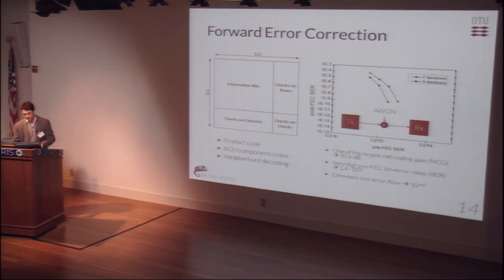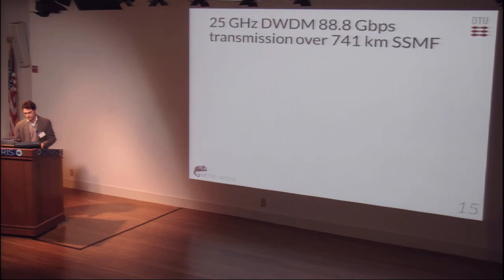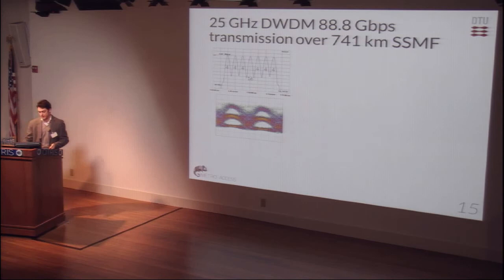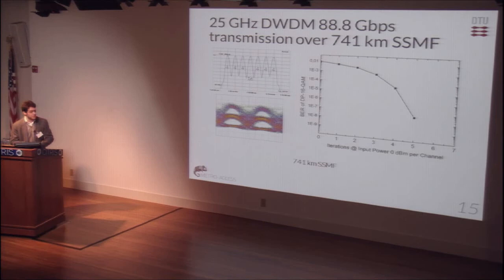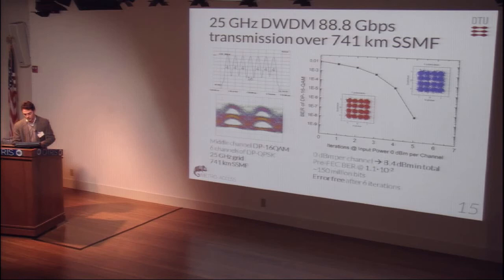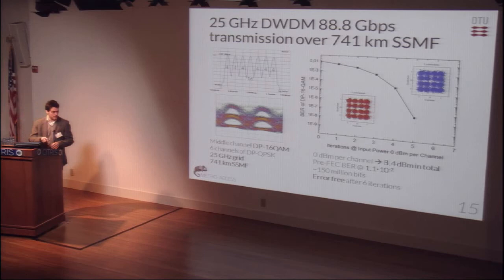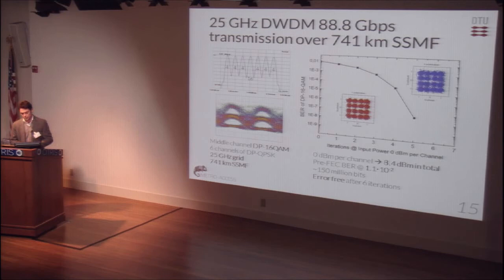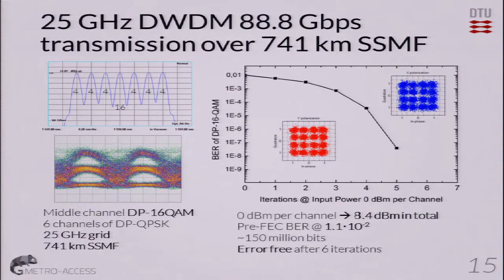As we usually do, we wanted to validate it experimentally. We set up a channel of DP-16QAM at 88 gigabits per second, surrounded by six QPSK channels on a 25 gigahertz grid. We transmitted over 741 kilometers of single-mode fiber and recovered the constellations to find that with 8.4 dBm total power, we were able to achieve error-free transmission for more than 150 million bits processed, starting from 1.1 × 10⁻³ in less than six iterations. We are also working on improvements in combination with other things like CAP and other modulation formats, and we really believe in the potential of this forward error correction code.